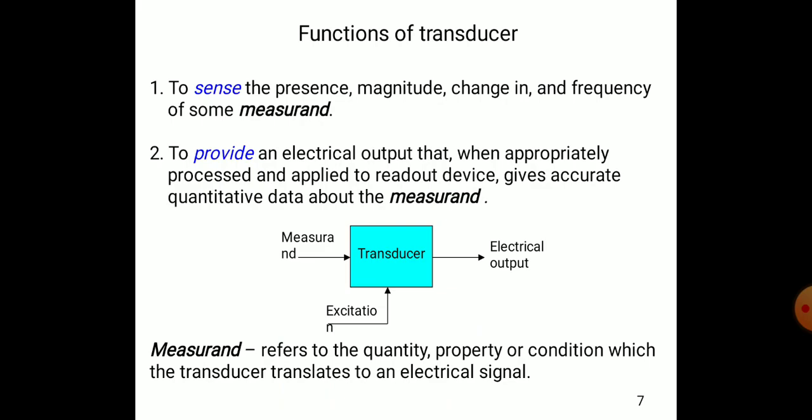The functions of a transducer are: to sense the presence, magnitude, change, and frequency of some measurand; and after that, to provide electrical output which, when appropriately processed and applied to a readout device, gives accurate quantitative data about the measurand. A measurand is any parameter you want to measure — temperature, pressure, strain, length, angle, and so on.